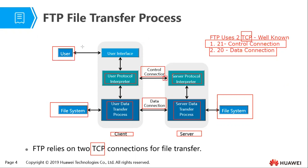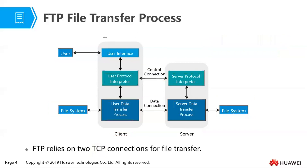FTP sends data in terms of streams of data, and it uses what we call an end-of-file indicator to identify the end of a file so that a particular connection can be closed. It should also be noted that a new data connection is required for each file or directory that is to be transferred. So you form one TCP control connection, but in order to transfer each file, you need a different data connection.